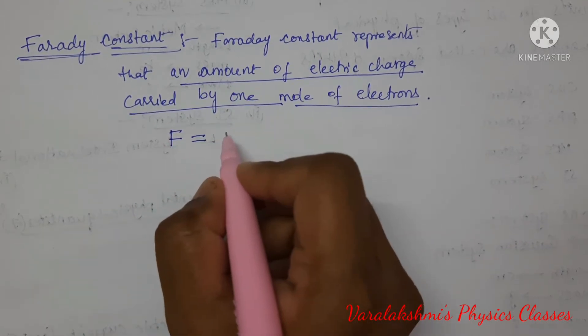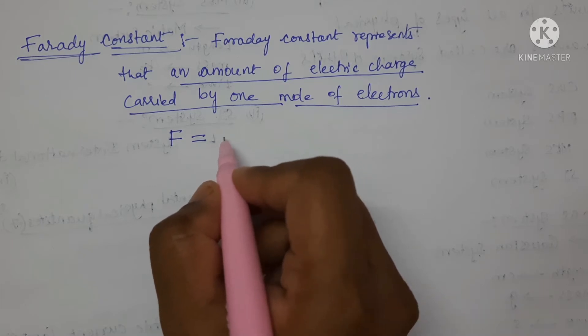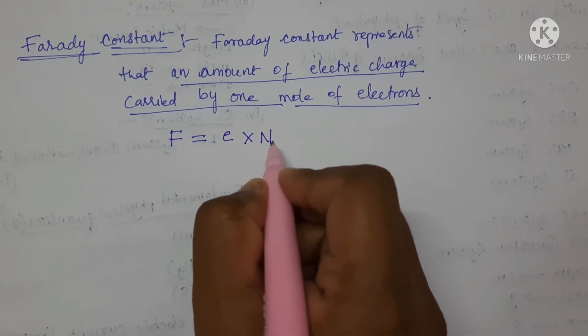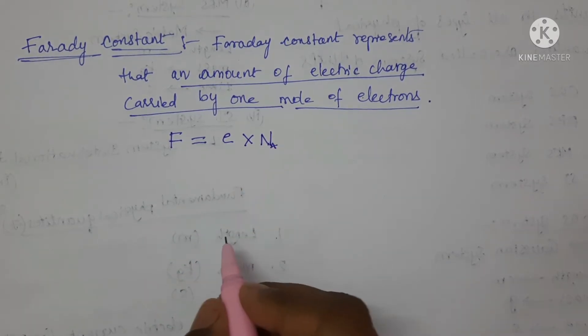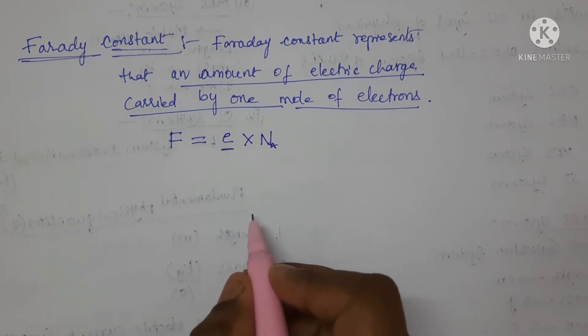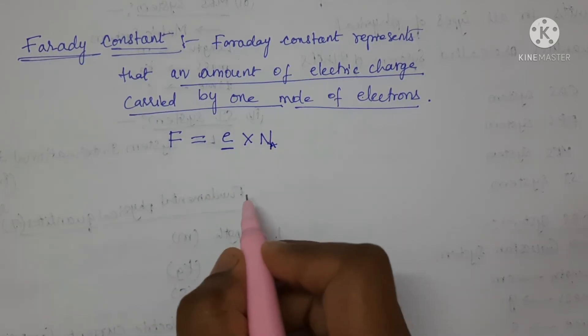The formula for Faraday constant is charge multiplied by Avogadro's number. Now here, E is the charge of an electron and N subscript A is Avogadro's number.